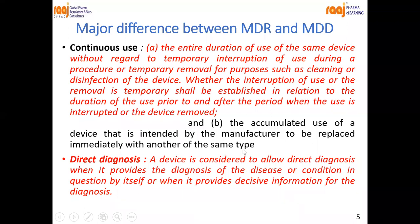A device should be replaced immediately with another of the same type — for example, a pacemaker placed for heart functioning, which has a stability period of about five years. Before expiry, the patient must be admitted and the pacemaker replaced. The doctor, manufacturer, and patient should maintain all history and data — when it was placed, the date of manufacture, and the expiry date. This is the meaning of continuous use.